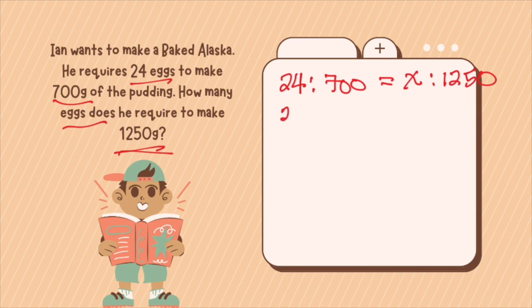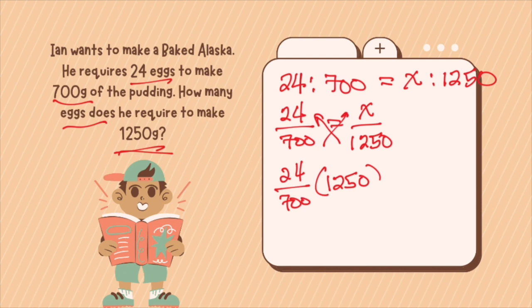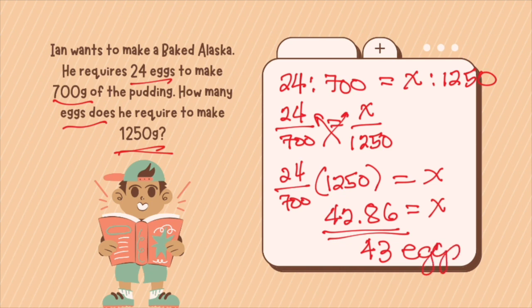So we can write this as 24 over 700 equals X over 1250. Cross, you will have 24 over 700 times 1250 will be the number of eggs that you will have. Can you try to answer the question? When you solve this question, 24 divided by 700 times 1250, you will get a decimal value, which is 42.86x. Now, since we are talking about eggs, eggs cannot be in decimal form. Therefore, you just need to round this up to a whole number, which means that you need 43 eggs to make 1250 grams of your pudding.